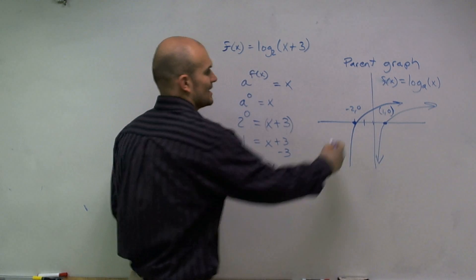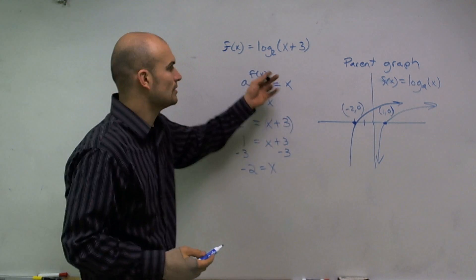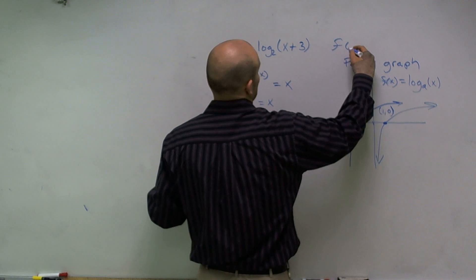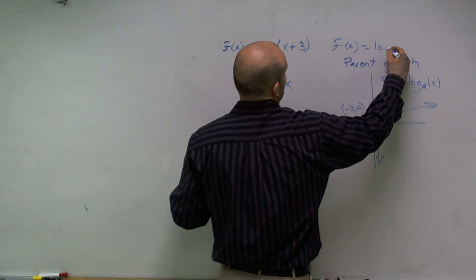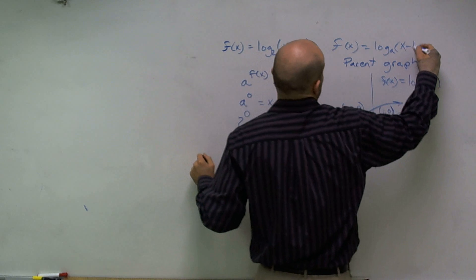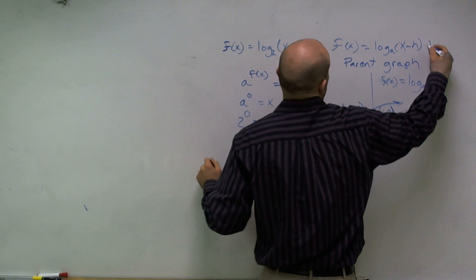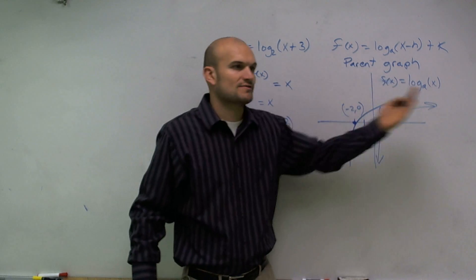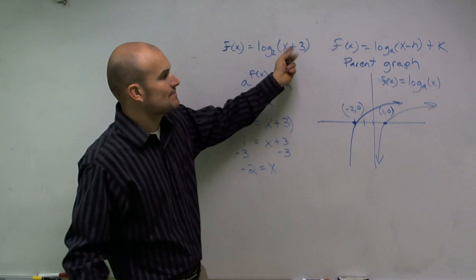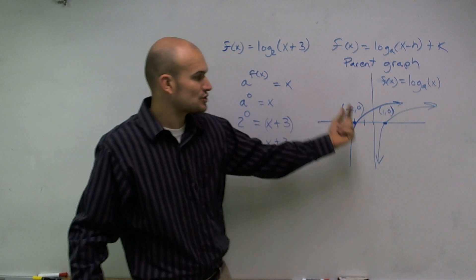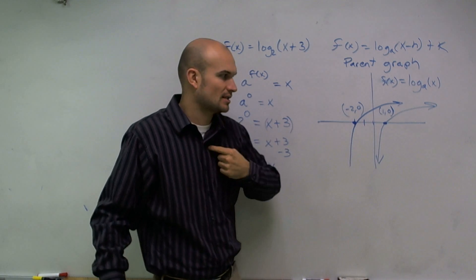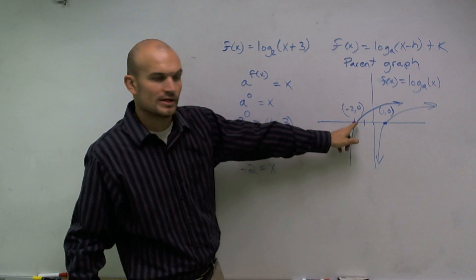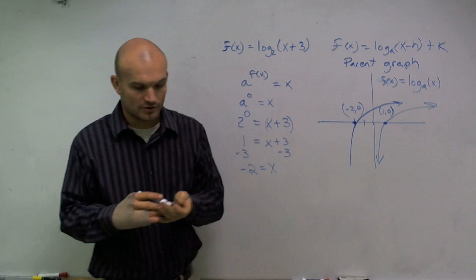Another way to look at this is as a transformation of the graph. You could write f of x equals log base a of (x minus h) plus k, where h tells you the horizontal shift left or right. Since I'm adding 3, that tells me to shift the graph 3 units to the left — 1, 2, 3 units to the left — and that's how you graph that function.